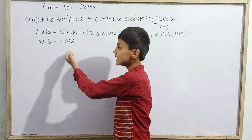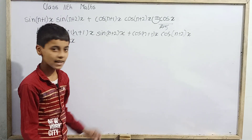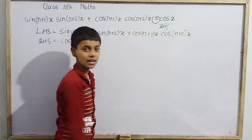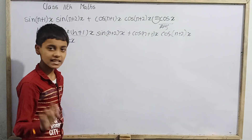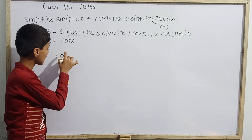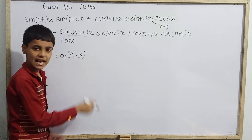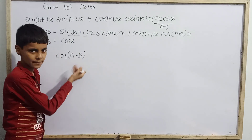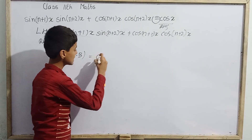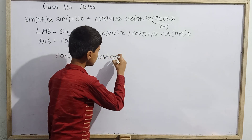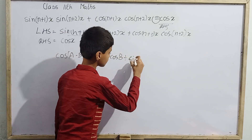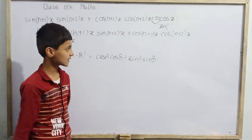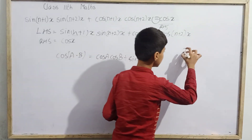So we can notice one thing very carefully here: this expression looks like the formula for cos(a − b). Generally, cos of (a − b) is written as cos a cos b + sin a sin b, where a and b are some angles.